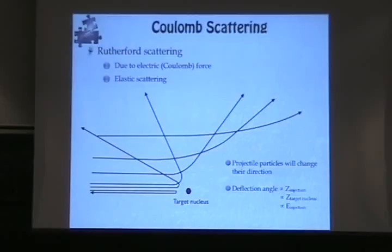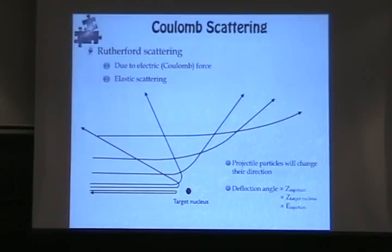First, Coulomb scattering. Cosmic rays are charged particles, and inside all material — which looks very solid, like this desk — it is actually made out of atoms and molecules. That means there are a lot of nuclei inside this material, and also electrons surrounding the nucleus. That's why everything we can see is electrically neutral — they don't have a net charge. But cosmic rays and high energy particles are energetic enough to go through the material.